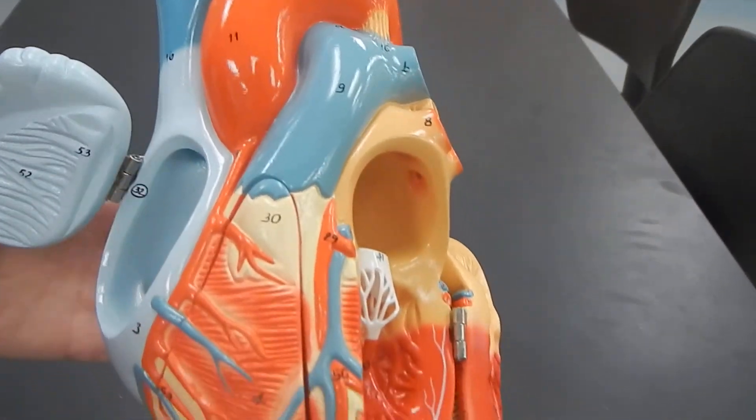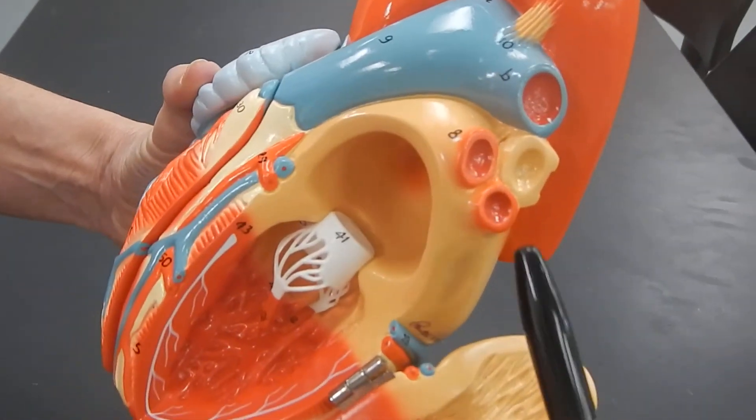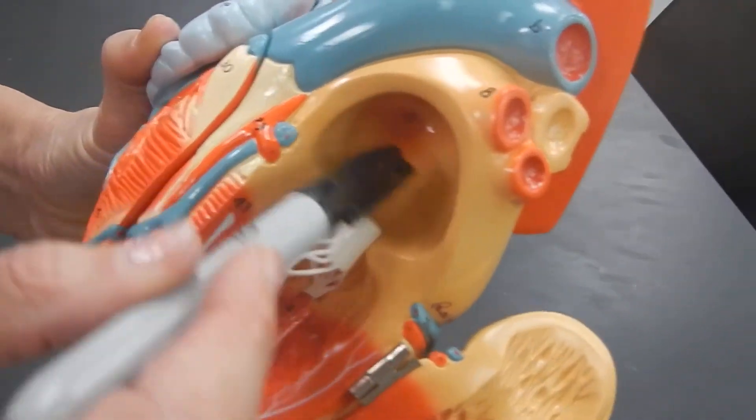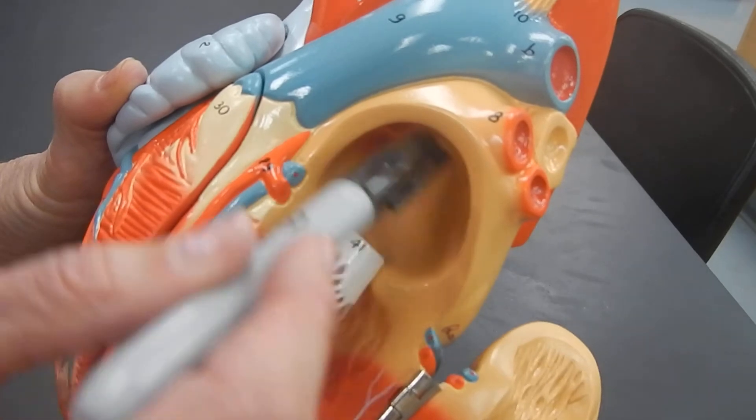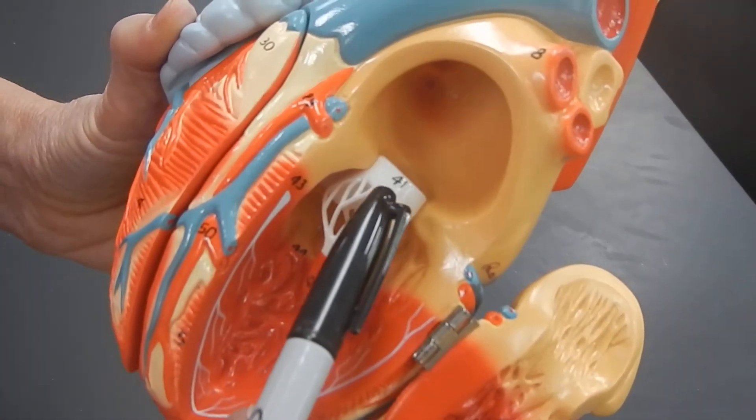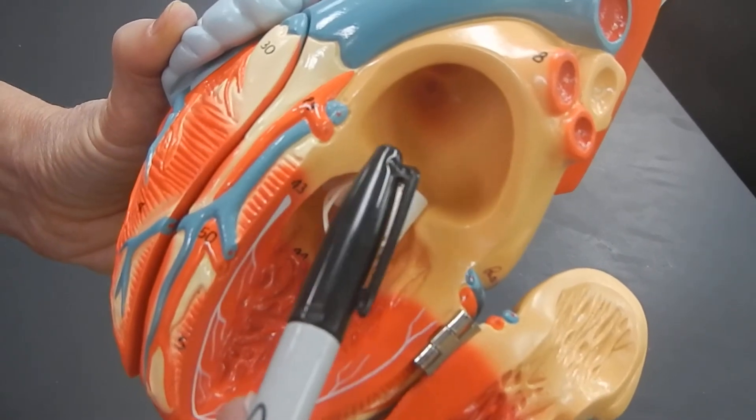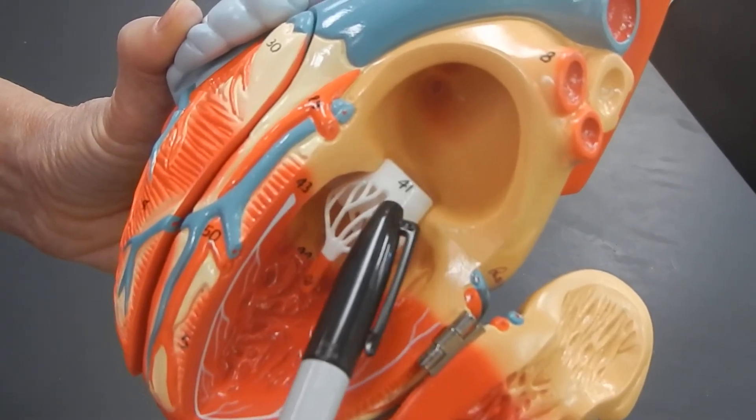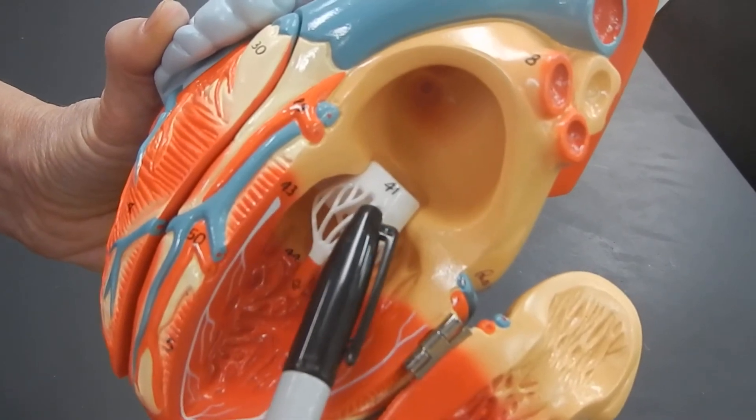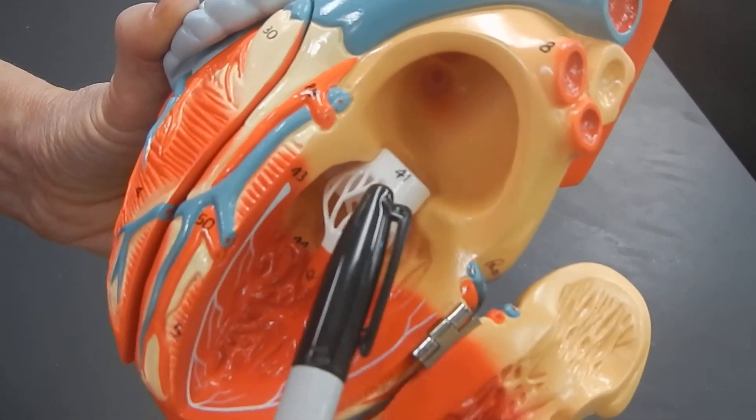Now, blood is going to come back to the heart through the pulmonary veins into the left atrium, and it goes from the left atrium into the left ventricle by going through this valve. This valve can be called the bicuspid valve, or it can be called the mitral valve.